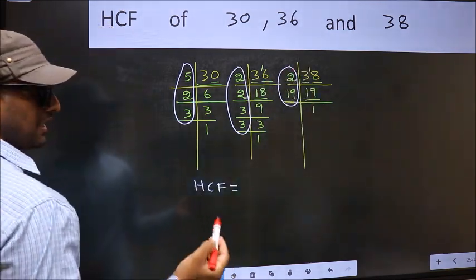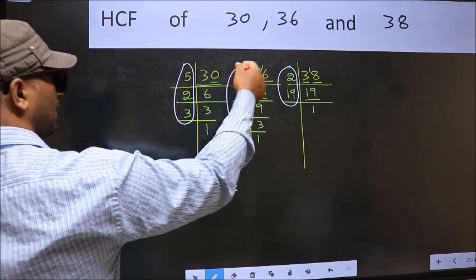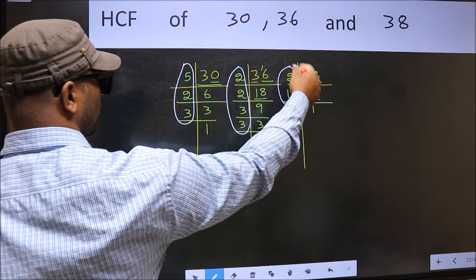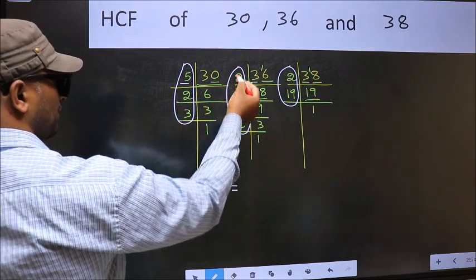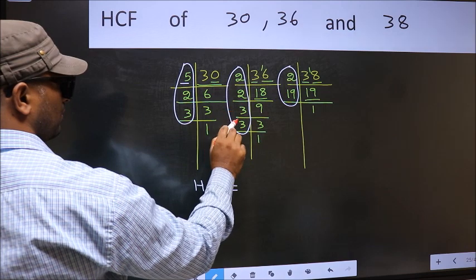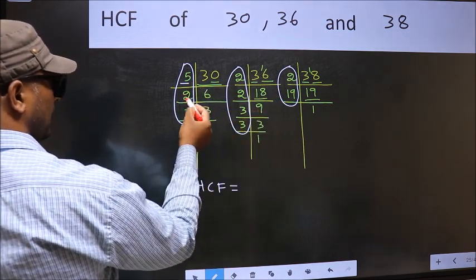So now let us find the numbers which should be present here, here and also here. Starting with the number 5. Do we have 5 here? No. So no need for us to check in the other place. Next number 2.